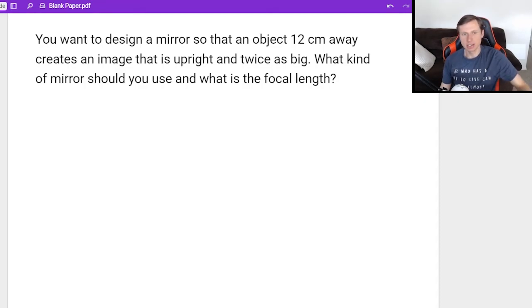So let's see what I tell us. DO is 12 centimeters. It says I want to be twice as big. What does that mean? Well, twice as big, that means the magnification M is just two. There's no units for magnification. So then we want to find what kind of mirror is either concave or convex. And we also want to know the focal length.